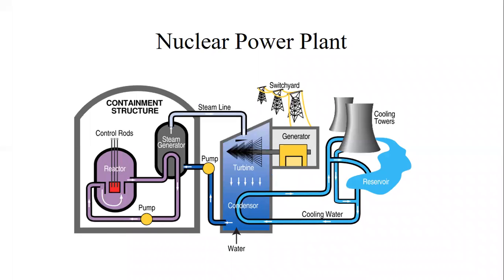This is the generalized layout of the nuclear power plant, where on the left hand side you can see a nuclear reactor. In the nuclear reactor, the nuclear fuel releases the energy and that energy is utilized to convert water into steam. That steam is going to drive the turbine, which ultimately drives the generator and we will get the electrical output.